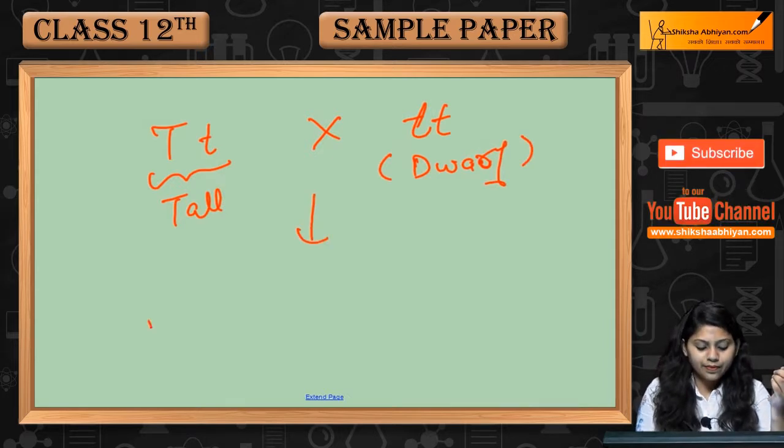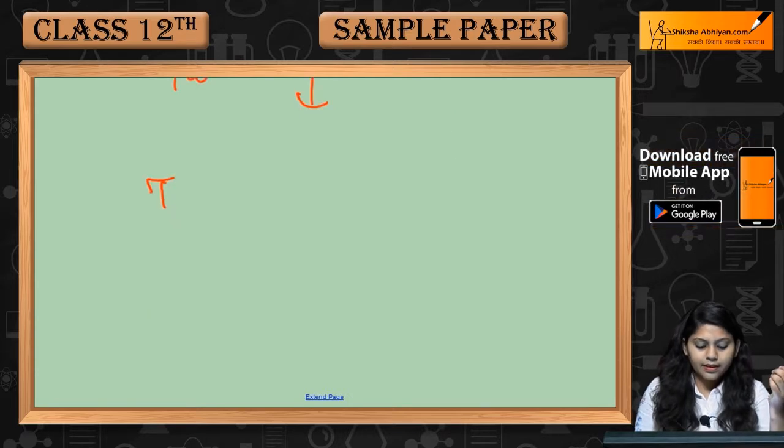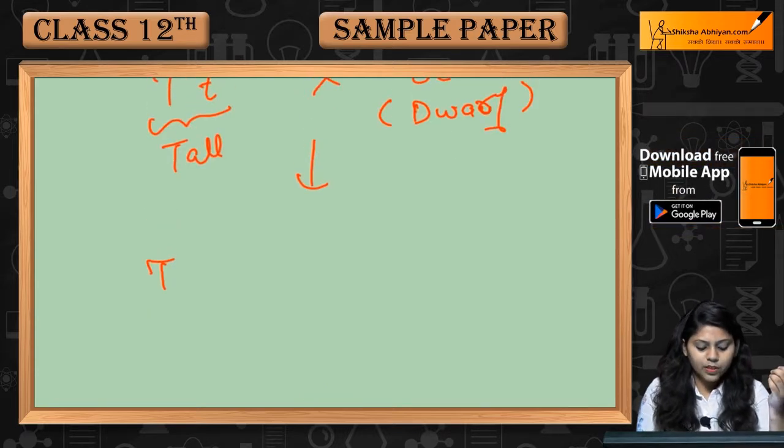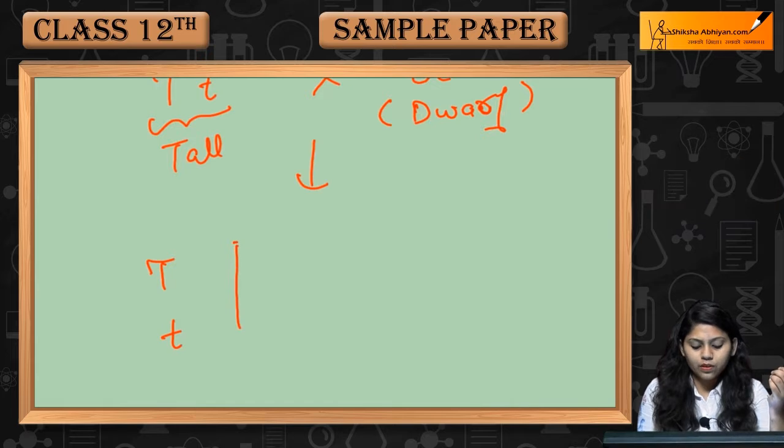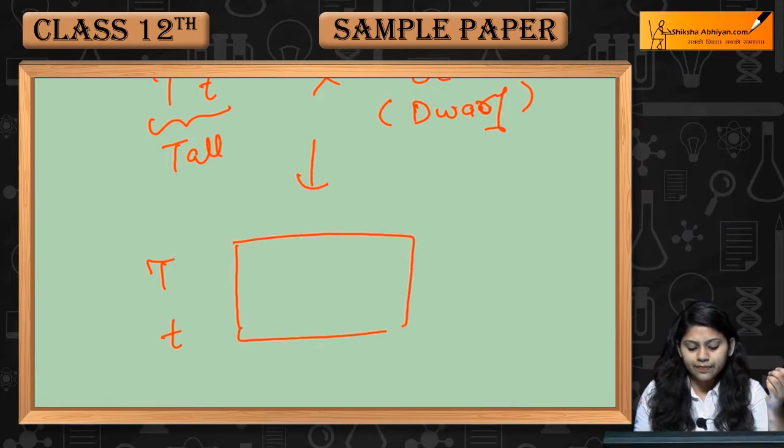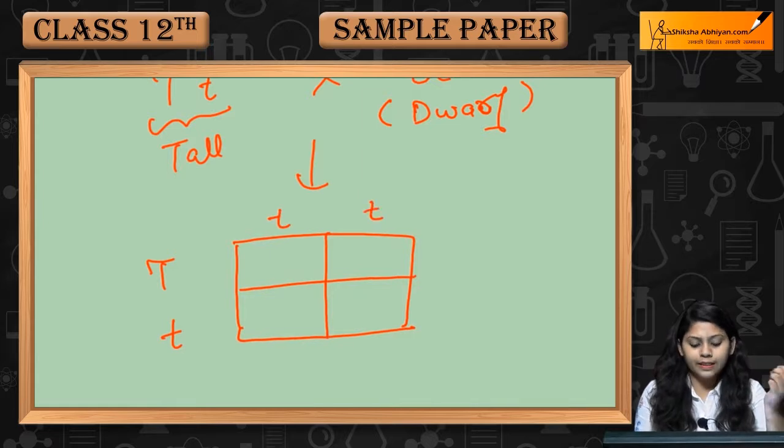What gametes will be formed? Capital T, small t, crossed with small t, small t.